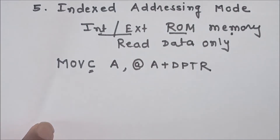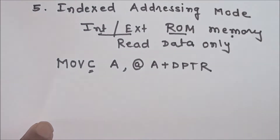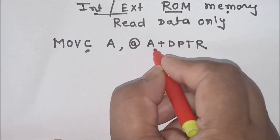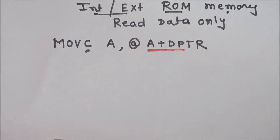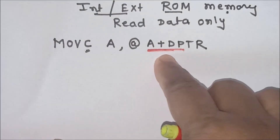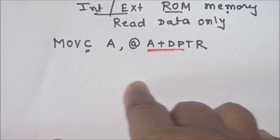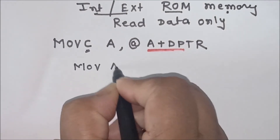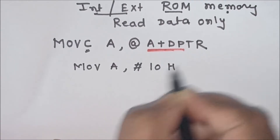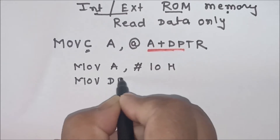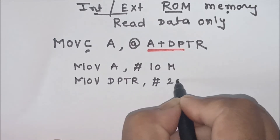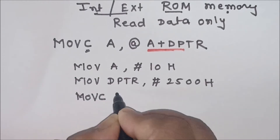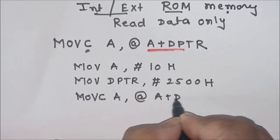The DPTR register is used as a pointer. The memory address is computed by the microcontroller by adding the contents of the accumulator to DPTR, then it gets the address of the memory location. The data from this memory location is stored back into the accumulator. For example, suppose the first instruction loads A with 10h, DPTR is loaded with 2500h, and then the instruction MOVC A, @A+DPTR is executed.